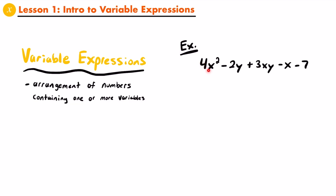We have 4 multiplied by x, and in fact this x is being squared, just like we could square any other number. You can also see that we're multiplying negative 2 by y. And over here, you can see that we're even multiplying x and y together. So all the operations that you have learned how to perform between different numbers can also be used for variables — whether that's between a variable and a number, or between two or more variables.